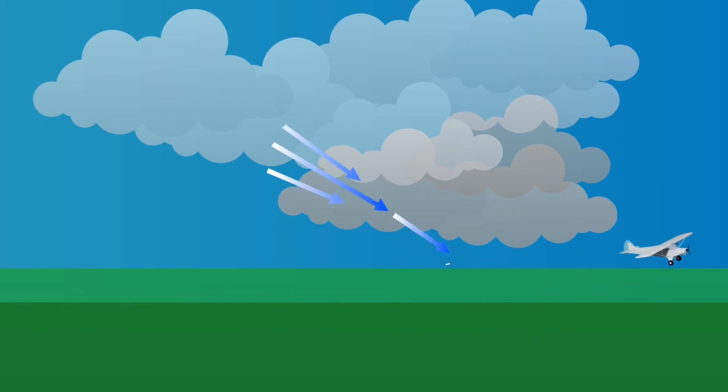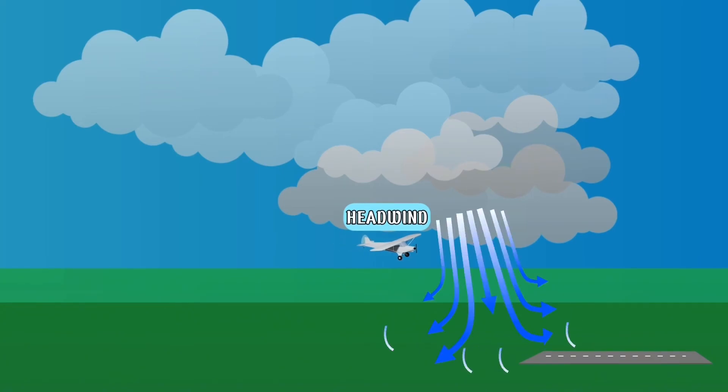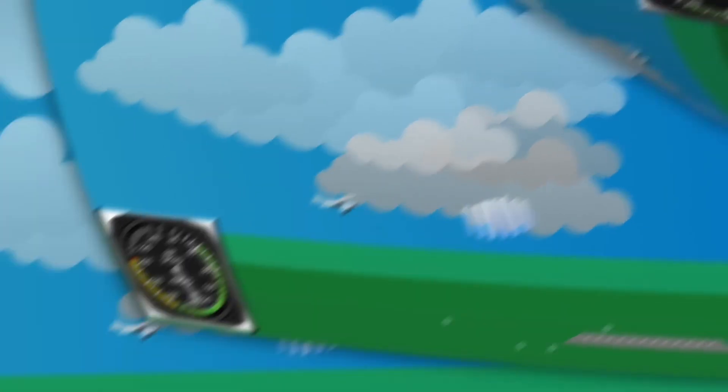Because a microburst hits the ground and veers off in all directions, it means that initially, when flying into the microburst, it would have a very strong headwind. Then, as you enter the middle of the microburst, you would feel the brunt of the downdrafts. After pushing through the downdrafts in the middle of the microburst near the ground, you would then feel a large tailwind as you exited the microburst.